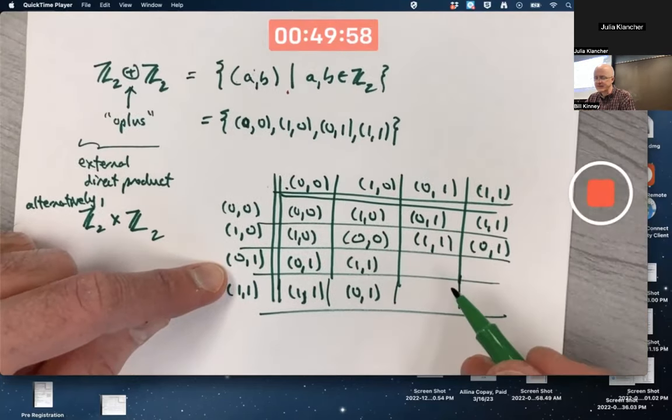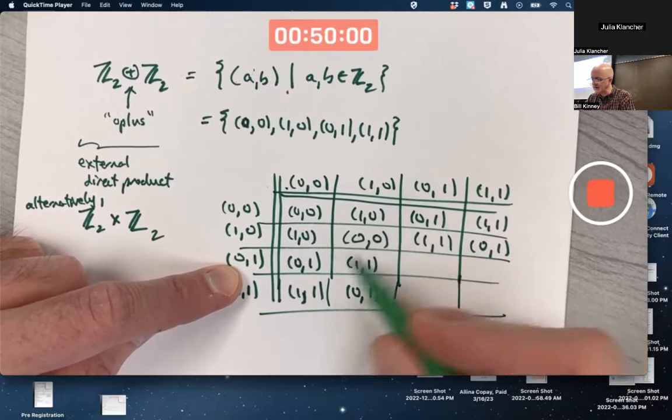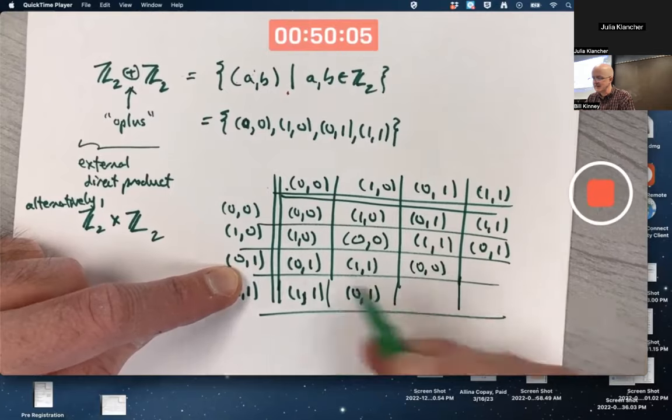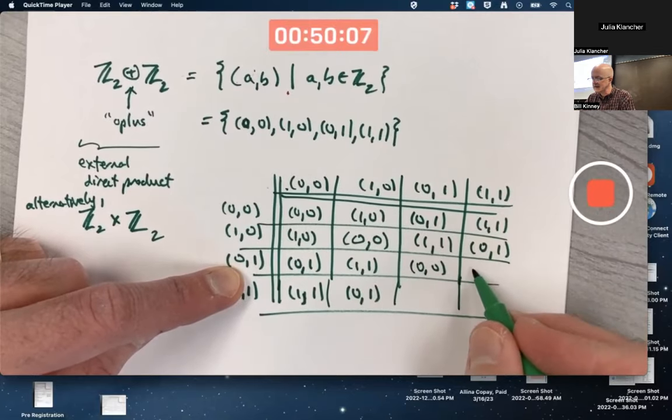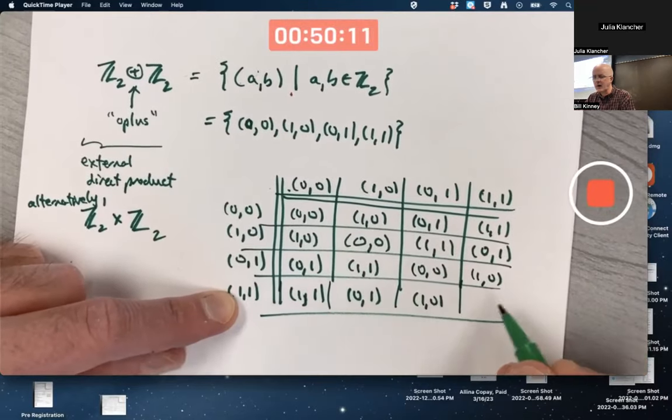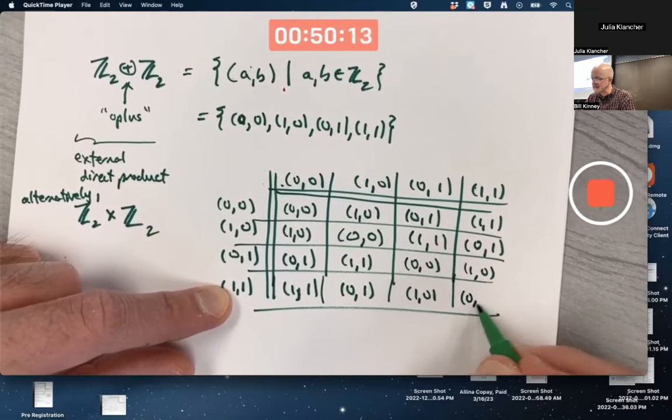Only four left to fill in. I hope you quickly see that (0,1) plus itself is (0,0), (0,1) plus (1,1) is (1,0), and finally (1,1) plus itself is (0,0).